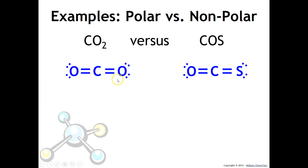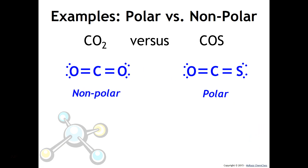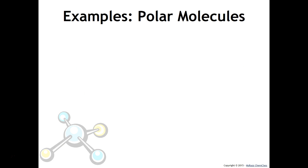Another example: CO2 versus COS. CO2 is nonpolar, but COS is polar. The reason is that CO2 has the same atoms on each side of carbon, while COS has oxygen on one side and sulfur on the other. Each has a different attraction for electrons, making COS a polar molecule.